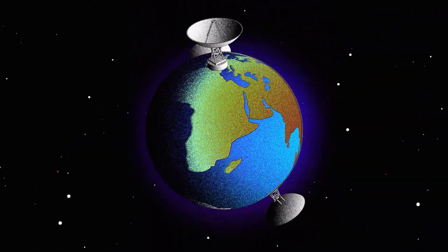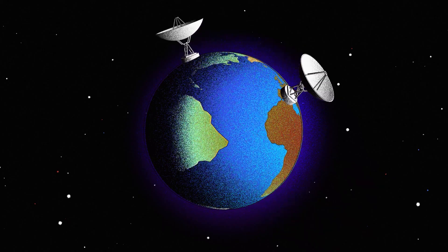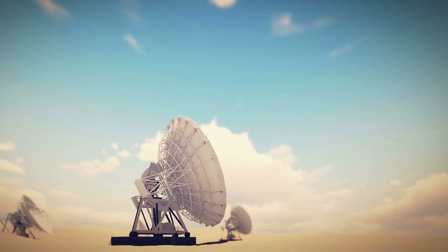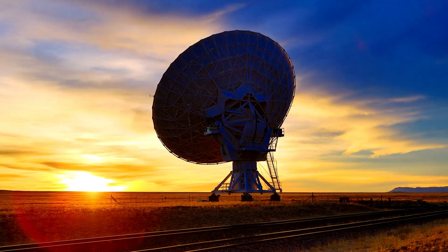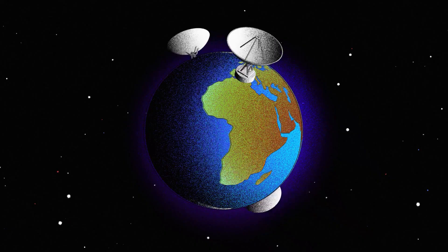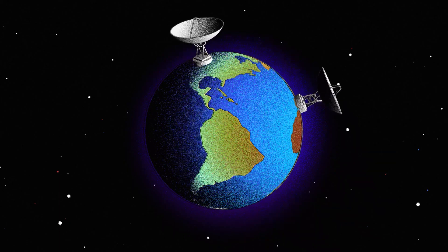The DSN is a collection of big radio antennas in different parts of the world. There are DSN locations near Canberra, Australia, Madrid, Spain, and Goldstone, California. Those sites are almost evenly spaced out around the planet.